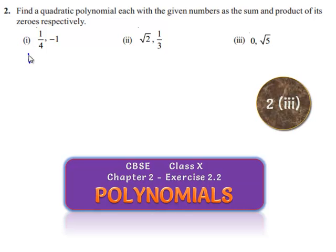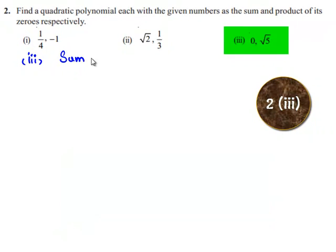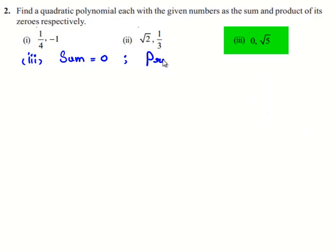Now, coming to the third part, the sum of the zeros given to us is 0 and the product of the zeros is equal to root 5.